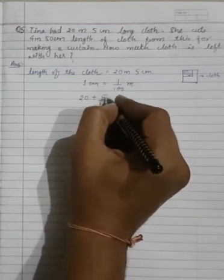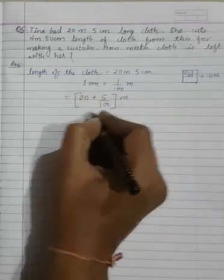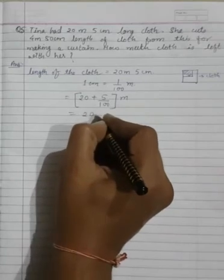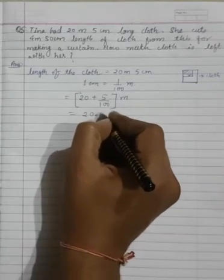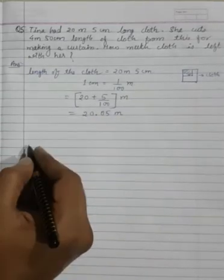Converting 5 centimeter into meters. This will be in meters. So it will become 20.05 meters. So this is the unit. This is the length.